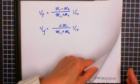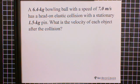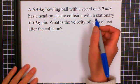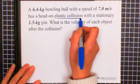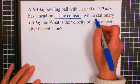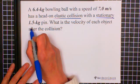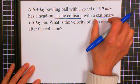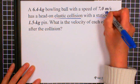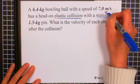Next, let me show you an example. A 6.4 kilogram bowling ball with a speed of 7 meters per second has a head-on elastic collision with a stationary 1.5 kilogram pin. What is the velocity of each object after collision? So first of all, we say this is a head-on elastic collision and the second object is stationary. That means the velocity equals zero initial. So this is the second object, V2 naught equals zero.